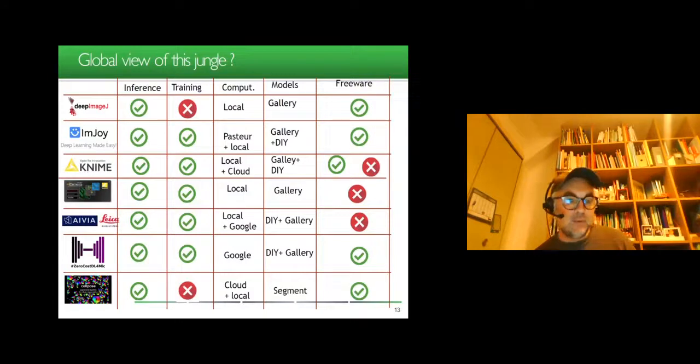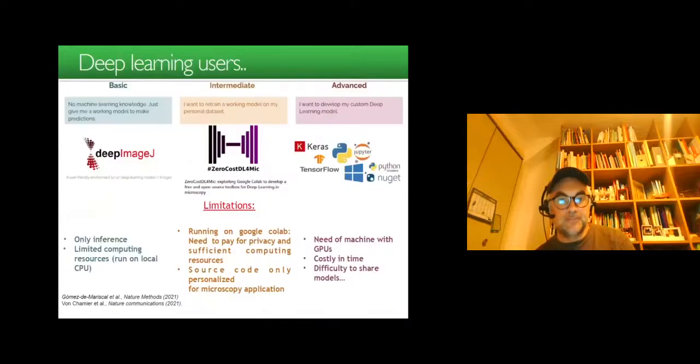In this case, you have to adapt the architecture, and this is what we will see in the hands-on. In this sense, you can have a view of three types of users of deep learning: either basic, no machine learning knowledge, just give me a working model to make my prediction, that's the DeepImageJ approach. You can have an intermediate level: I want to retrain a working model on my personal data. And you can have an advanced profile where I want to develop my custom deep learning models. A limitation of the intermediate level, which I believe you are here in the course, is that you are for the zero-cost deep learning for microscopy on Google Colab, which needs to pay for privacy and sufficient computing resources. And source codes are only personalized for microscopy applications. If you run outside for this, then you may have some specificity which are not addressed in here.